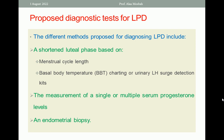The first approach is a clinically shortened Luteal Phase, based on menstrual cycle length, basal body temperature charting, or urinary LH surge detection kits — first to know the time of ovulation, then to know the starting point of the Luteal Phase. The second is the measurement of single or multiple serum progesterone levels. The third is an endometrial biopsy — one clinical, one biochemical, and one histological diagnostic approach.